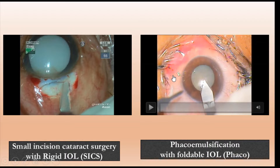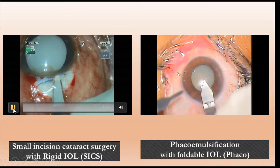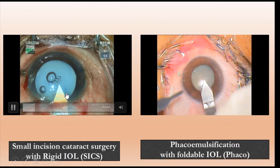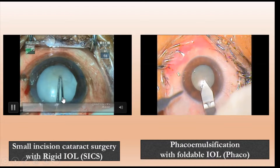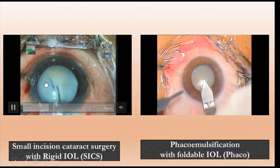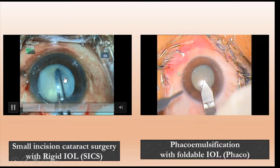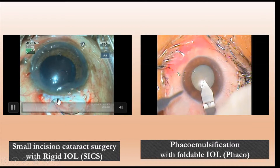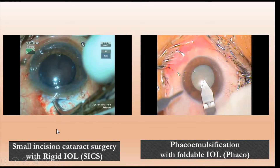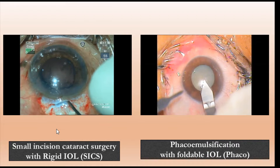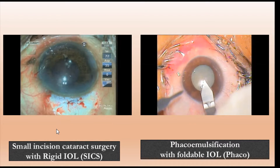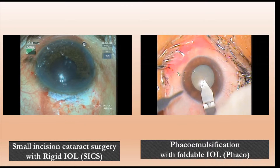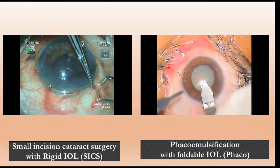Then there was a transition to sutureless cataract surgery — small incision cataract surgery (SICS) — where a 6 to 7 millimeter three-planar incision was made. The anterior capsule is manually removed, the nucleus extracted, and there is no need for suturing. A rigid PMMA intraocular lens is placed, and with hydration of the wound the section closes by itself without suturing and the conjunctiva retracts and closes.